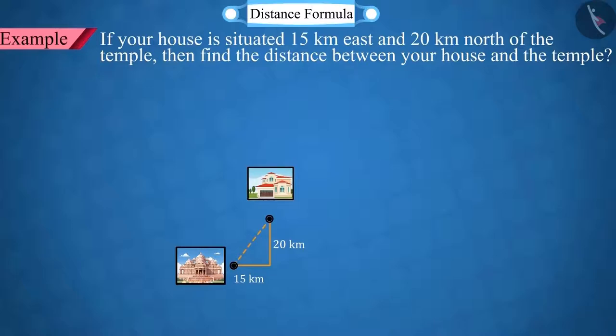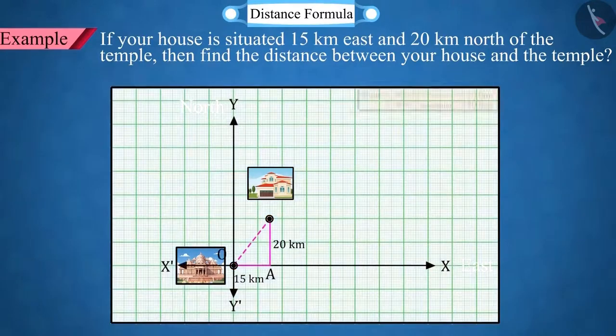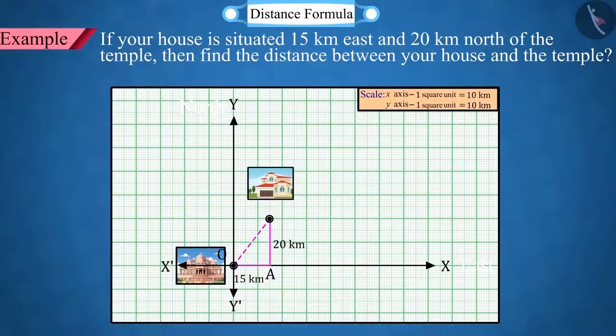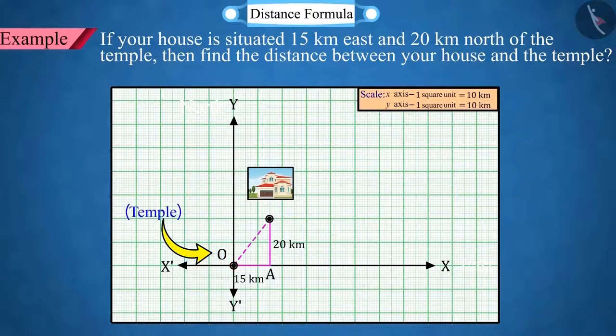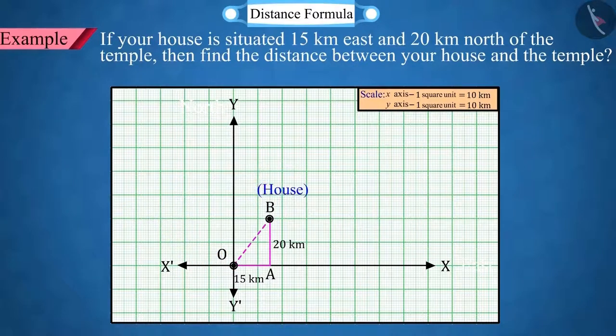First of all, we represent it graphically, which is what we see in this picture, where point O is represented as temple and point B as the house. Let the point O be located at the origin point 0,0. If point O is joined to the point B, then a right-angled triangle is obtained here.